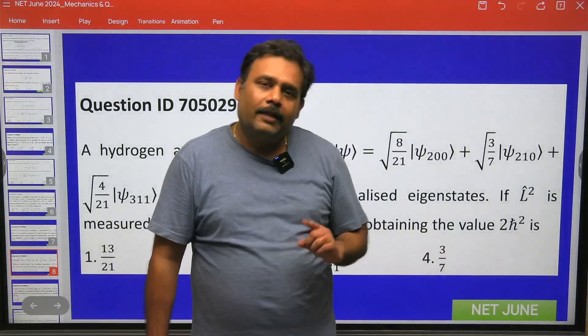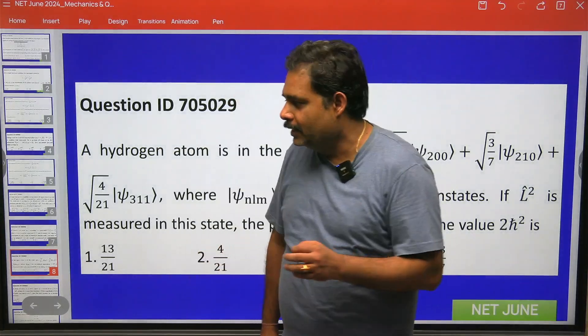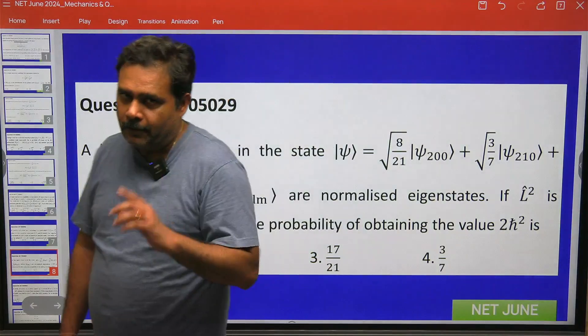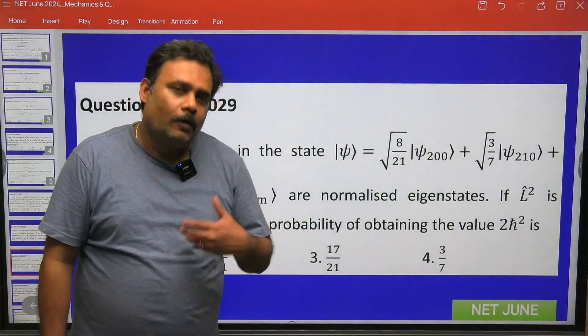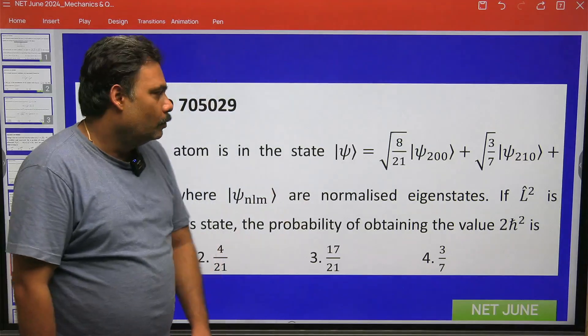So when we are getting the probability 2ℏ², that means l must be equal to 1. So we have to talk about from which state we are getting l equals 1.